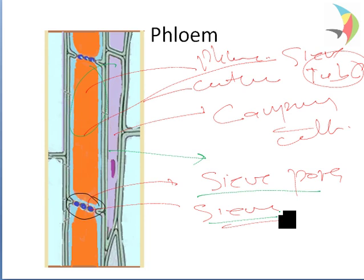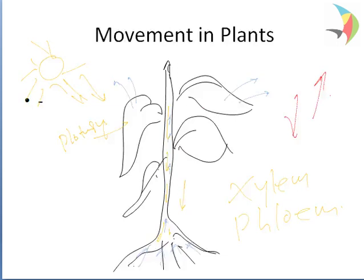The phloem structure has a sieve tube, companion cells, sieve pores, and sieve cells. Together, phloem and xylem help in the movement of all food material — from the lower root part to the upper parts of the plant. Xylem moves water while phloem moves photosynthates and other materials to different parts. The food is basically sugars and metabolites synthesized in the leaves, and substances like hormones synthesized at the tip of the root or stem are transported through the phloem conducting tissue.